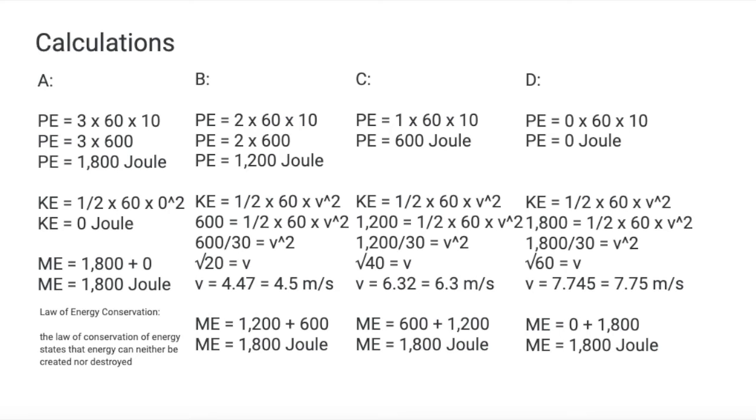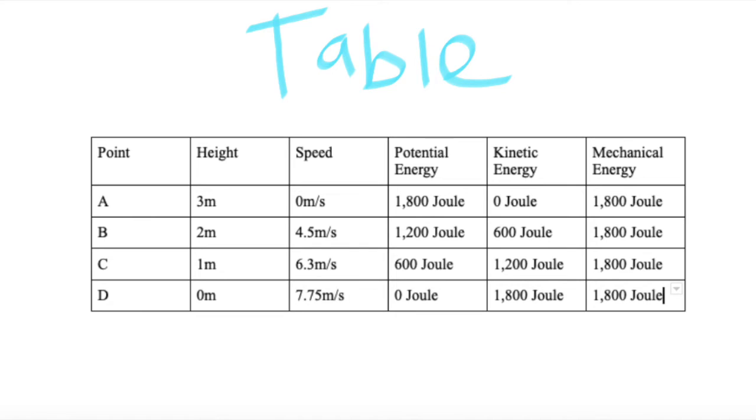This can be used in point B to point D because by that point we already know the mechanical energy from point A by substituting the velocity with zero. And so this is the table with all the information that I have stated before. Again, the mechanical energy for all is the same due to the law of energy conservation.